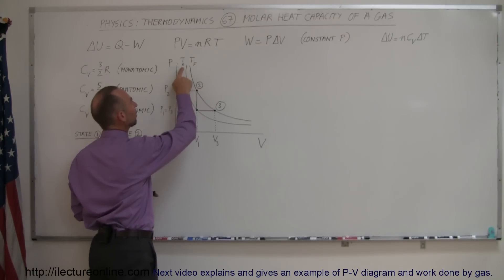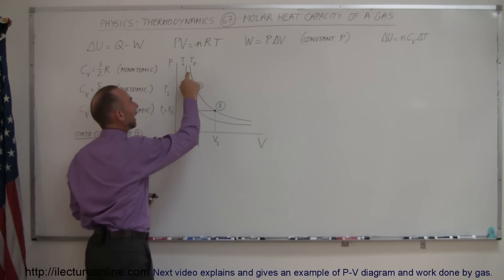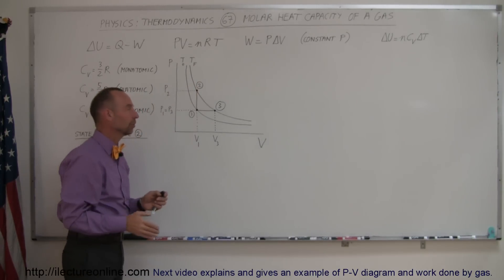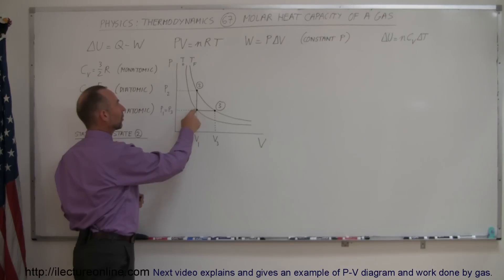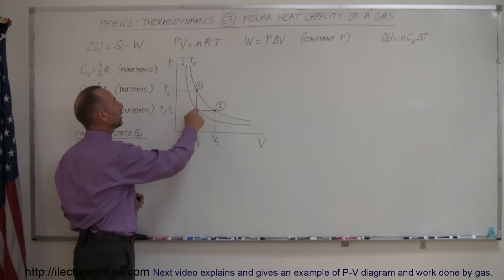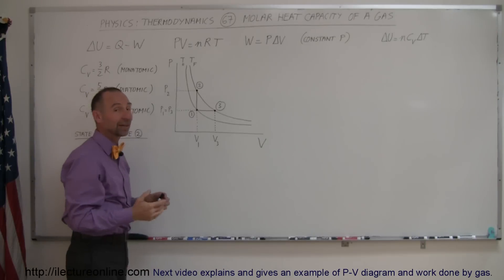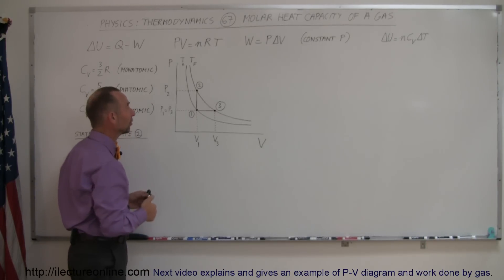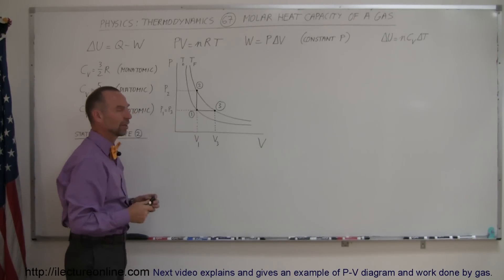On the left isotherm we have T sub zero, T initial, and on the right isotherm we have T final. So the temperature is at T sub zero at state one, and when we reach state two or state three — since they're on the same isotherm — the final temperature of the gas is the same for either state two or state three.